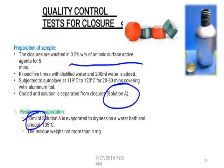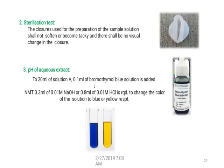The first test is residue on evaporation. Take 50 ml of Solution A, evaporate to dryness on a water bath, and dry at 105°C. After drying, the weight of the residue should not be more than 4 milligrams. This is the residue on evaporation test for closures.